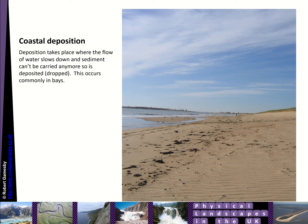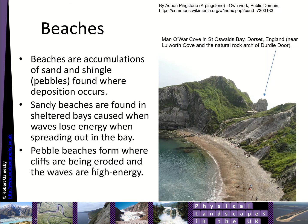Hello, this is a GCSE explainer on coastal deposition and the landforms it creates. Deposition takes place where the flow of seawater slows down and sediment can't be carried anymore, so it's deposited or dropped. That commonly happens in bays — you can see a wonderful image of the beach here with lots of material being dropped, including some plastics and seaweed. You can also see ridges in the beach created by wind, and the gradient of the beach. A beach is basically an accumulation of sand and shingle — it could be a pebble beach — and it's found anywhere where deposition occurs.